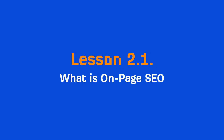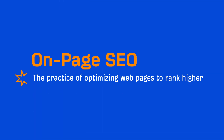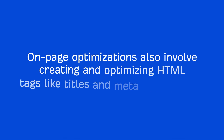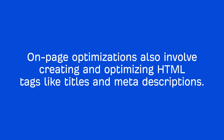So what is on-page SEO? It's simply the practice of optimizing web pages to rank higher in search engines, and it revolves heavily around optimizing pages for search intent. But on-page optimizations also involve creating and optimizing HTML tags like titles and meta descriptions.